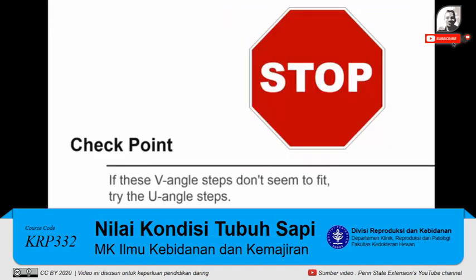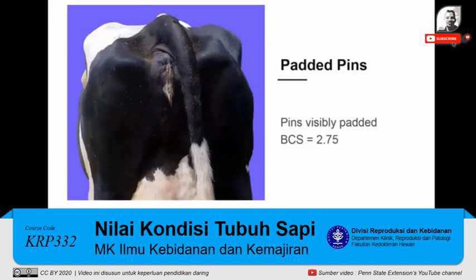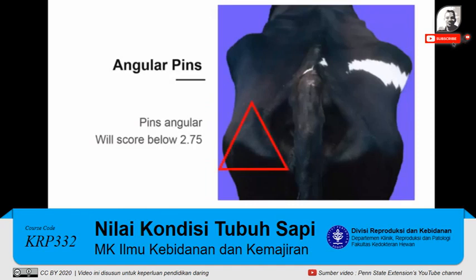This is a good place to make sure you are headed down the right path. If the decisions based on the hooks don't seem to fit the cow you're scoring, try going through the steps for cows with a U angle. Having confirmed a score of 2.75 or less, we now refine that score by evaluating the pins — are they padded or angular? If the pins have visible padding, the cow will get a body condition score of 2.75. If there is no visible fat on the pins, the cow will score below 2.75.